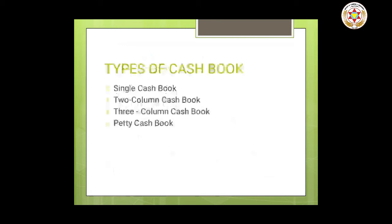The single column cash book is a subdivision of the journal. Also called the simple or single column cash book, it is like an ordinary cash account. The format is: date, particulars, LF, amount on both sides. Recording transactions in the simple cash book and posting them in the ledger is understood in the same way as the ledger. This is the simplest type of cash book.